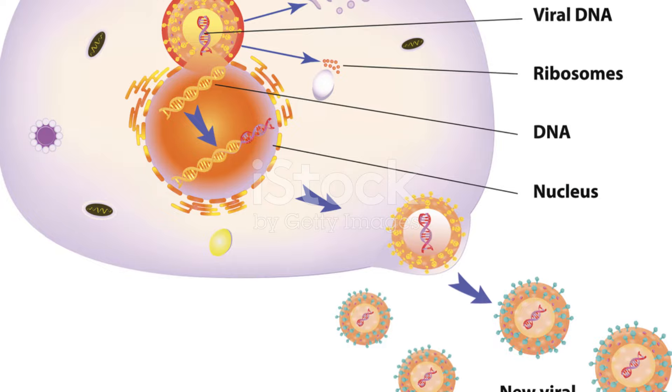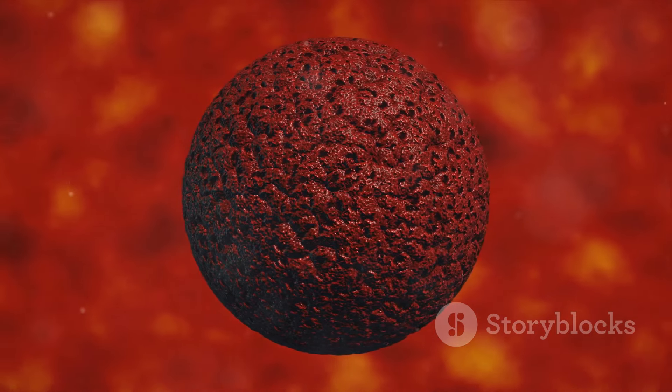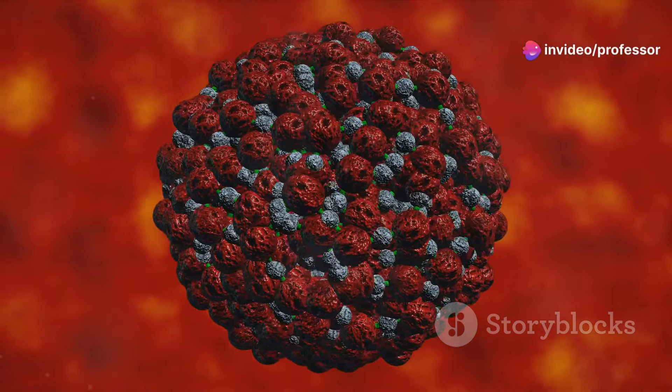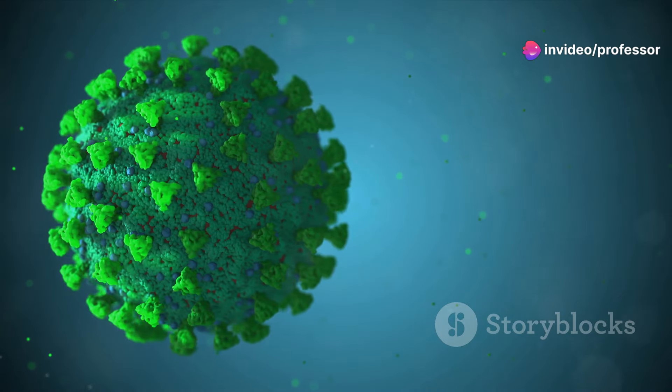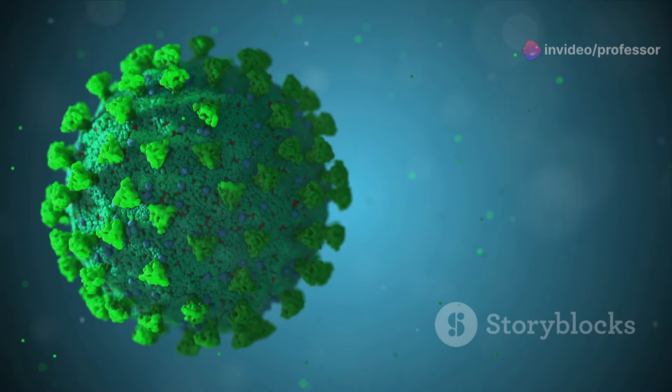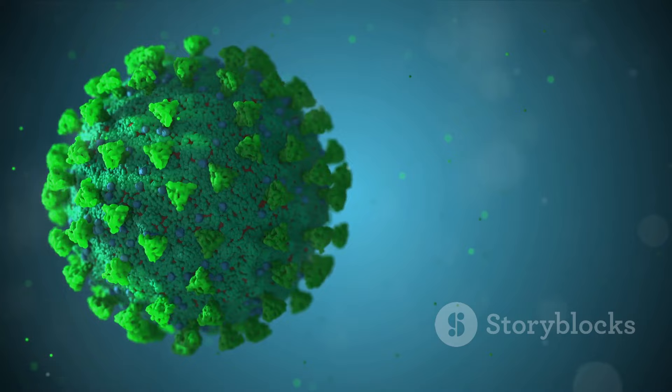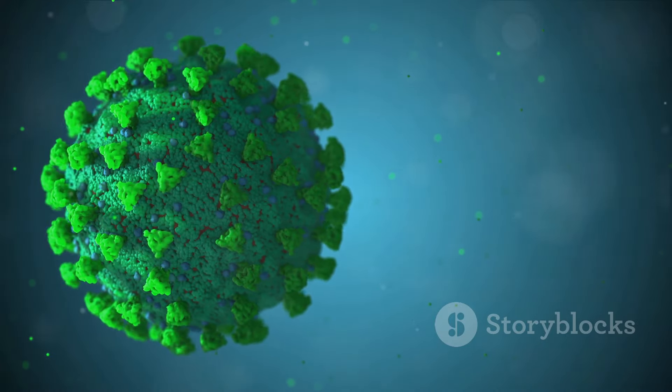This RNA then commandeers the cell's machinery, usually reserved for its own genetic material, and begins to replicate. The cell unwittingly becomes a virus factory, churning out countless copies. Each new particle is a clone of the original invader, ready to infect more cells.